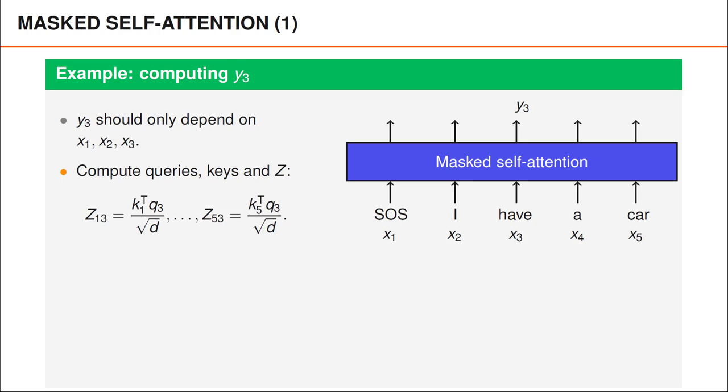For instance, to compute z13, we take the inner product between the key vector k1 and the query vector q3, and we then divide by the square root of d, where d is the length of these query and key vectors.